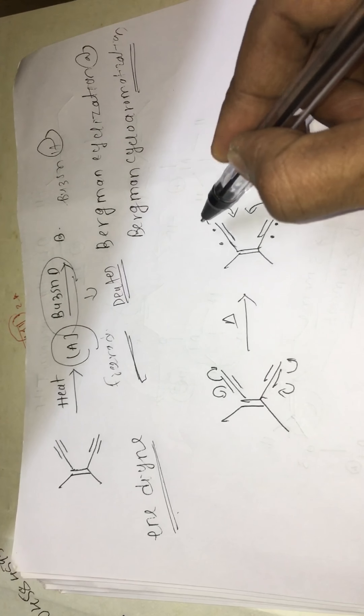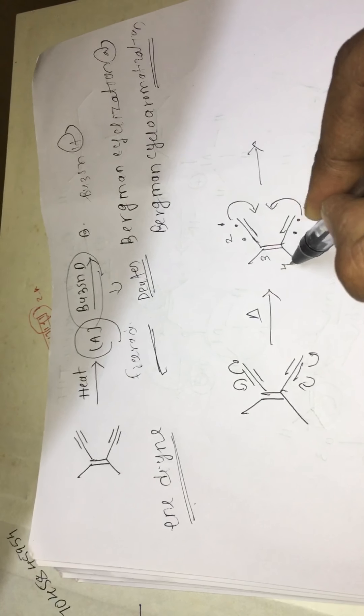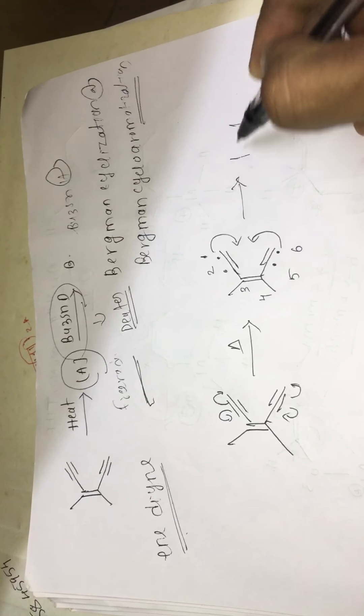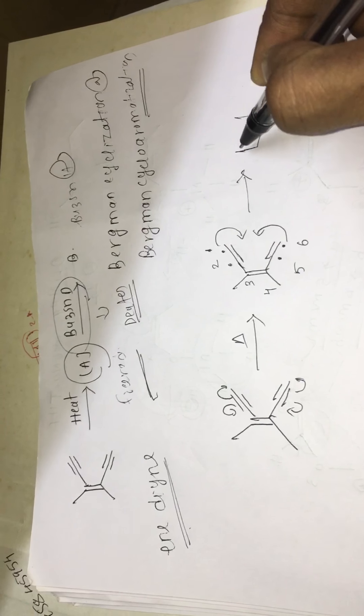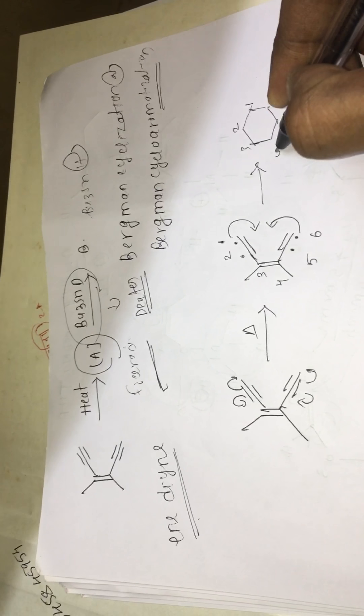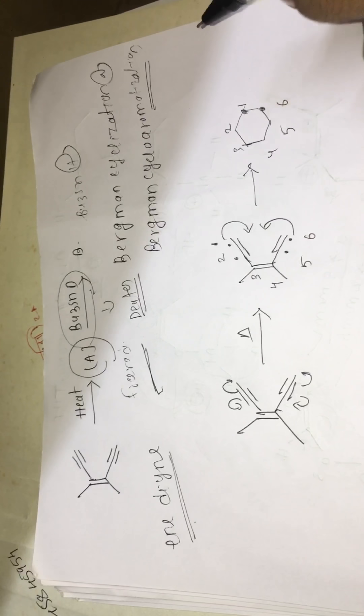So make sure that you should not get confused. So for that you just give numbering. This first carbon, second carbon, third, fourth, fifth, sixth. So you just write a six-membered ring here. One, two, three, four, five, six. So here no radicals. It's fine.